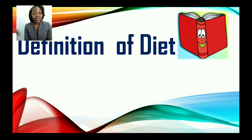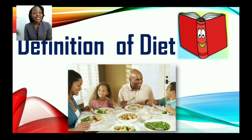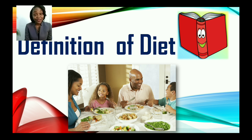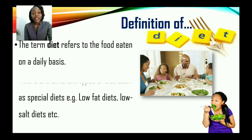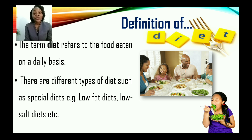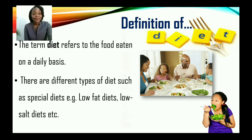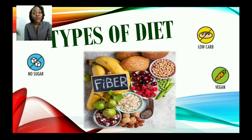Now let us look at a definition for diet. Based on your prior knowledge, are you able to define the term diet? Observe this picture and see if you can develop a definition for yourself. The term diet refers to food eaten on a daily basis. There are different types of diet, such as special diets — for example, low fat diets and low salt diets.